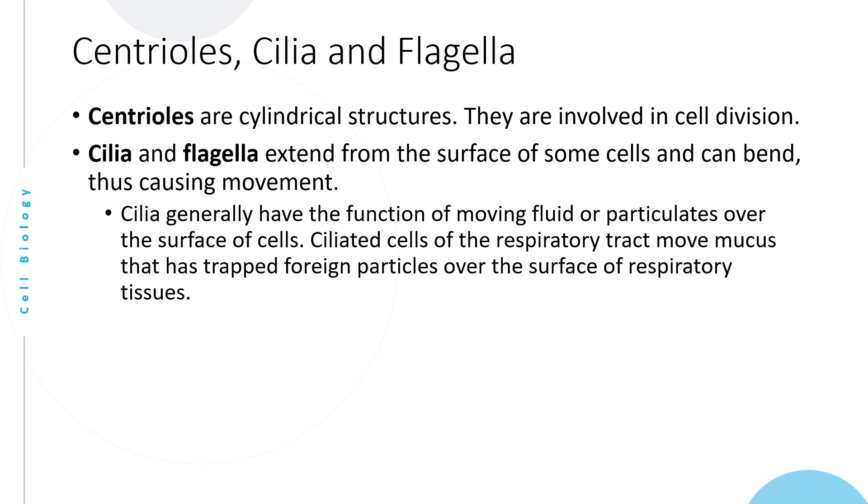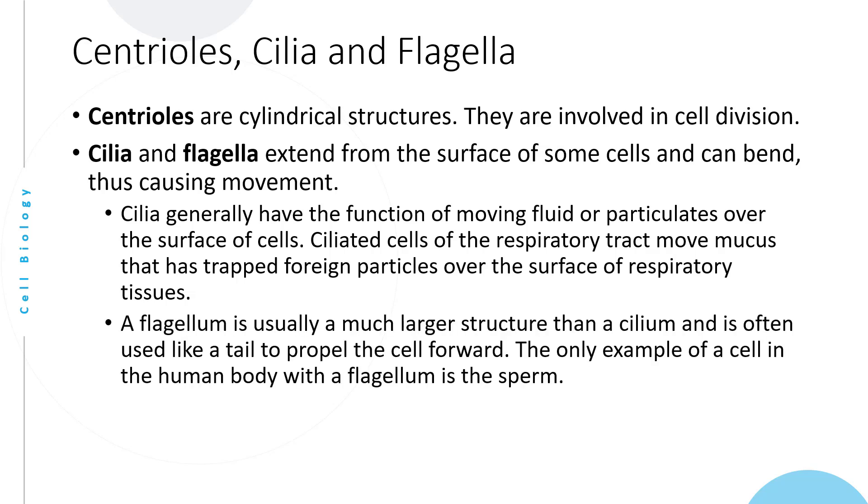Cilia generally have the function of moving fluid or particulates over the surface of the cell. For example, ciliated cells of the respiratory tract move mucus that has trapped foreign particles over the surface of respiratory tissues. A flagellum is usually a much larger structure than a cilium and is often used like a tail to propel the cell forward. The only example of a cell in the human body with a flagellum is the sperm.